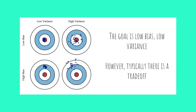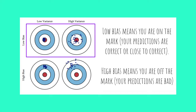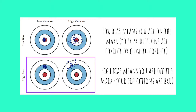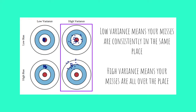The goal of any machine learning model is to have low bias and low variance, but there is typically a trade-off between the two. Low bias, as seen in the top two targets, means your predictions are correct or aren't off by much. High bias, as seen in the bottom two targets, means your predictions are consistently off the mark. Low variance means predictions are always in the same general vicinity — consistent whether accurate or not. High variance means predictions are all over the place with little consistency.